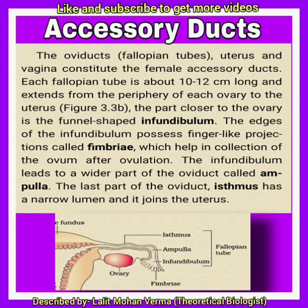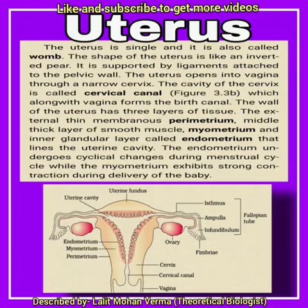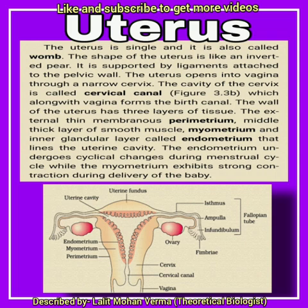The ampulla is the wider part of the oviduct, which opens into the third region — the isthmus, the narrow part of the duct. The isthmus links to the uterus and acts as the fertilization site, called the ampullary-isthmic junction. The uterus is also called the womb.